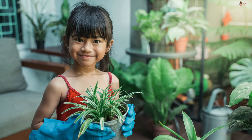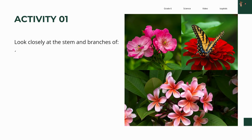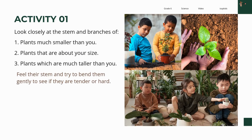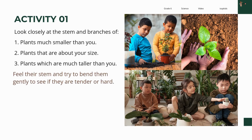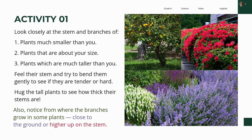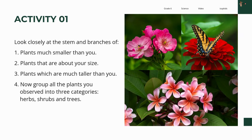Whenever you go out and see some plants, look closely at the stem and branches of plants much smaller than you, then plants that are about your size, and plants which are much taller than you. Feel their stem and try to bend them gently to see if they are tender or hard. Take care that the stem does not break. Hug the tall plants to see how thick their stems are. Notice from where the branches grow — close to the ground or higher up on the stem. Now group all the plants you observed into three categories: herbs, shrubs, and trees.